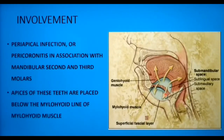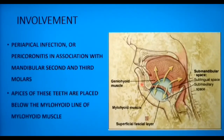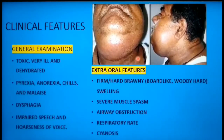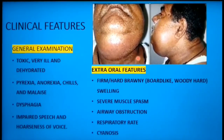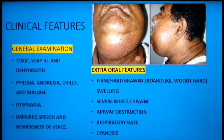The infection then spreads to the sublingual space around the submandibular gland, which is present posterior to the space. The submental space is also involved by lymphatic spread. This condition can also occur in a converse manner, by spread from the sublingual space to the submandibular space. Signs and symptoms vary in severity — upon general examination, the patient looks toxic, very ill, and dehydrated, with pyrexia, anorexia, chills, malaise, dysphagia, impaired speech, and hoarseness of voice.